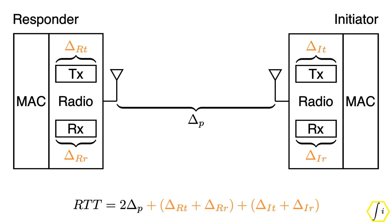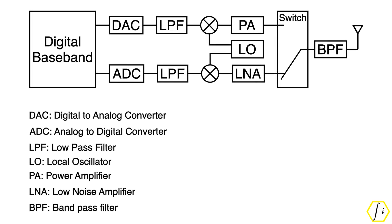To understand the challenges in accurate group delay calibration, we need to go deeper inside the radio. Here is a simplified block diagram of the radio internals. There is a digital baseband block where all the digital signal processing like automatic gain control, channel estimation, modulation, demodulation, etc. happen.